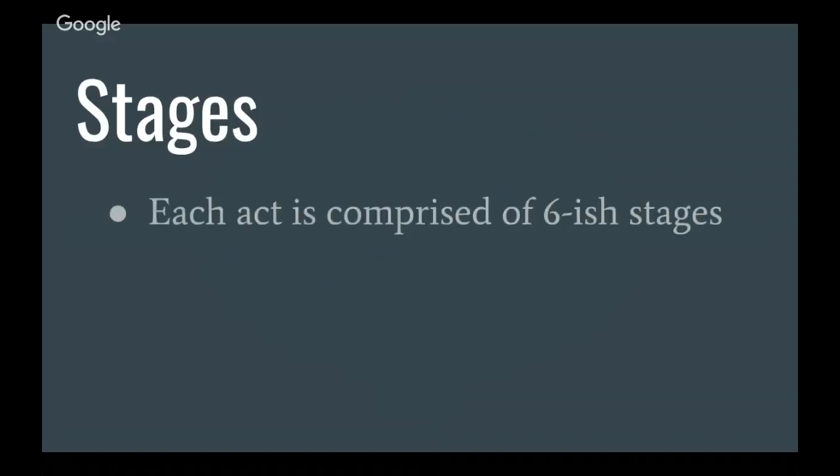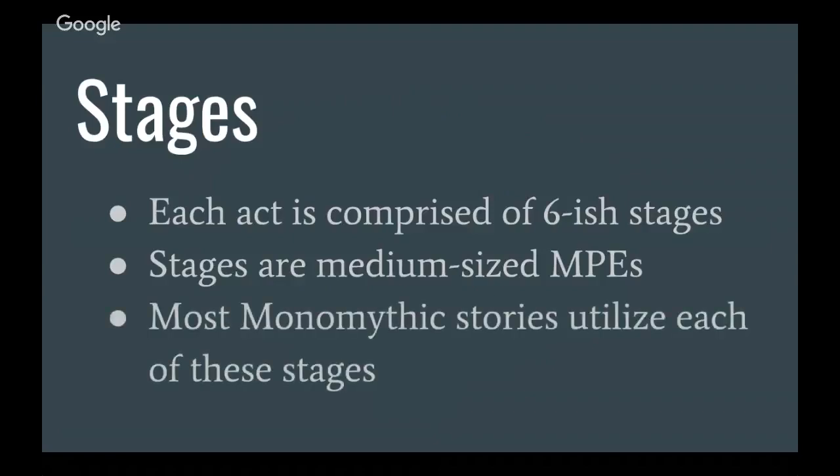Let's talk about stages. Each act is comprised of about six stages. Stages are medium-sized major plot events. They're still a major plot event, meaning that they're critical. But they're medium-sized. As you can see, if your story can be broken up into three sections, then those three major acts can be broken up yet again into another six. Most monomythic stories, most stories that follow the monomyth approach or the hero's journey format, utilize each of these stages. That's not to say that they're required or mandatory, but I would say that 90% of successful, both modern and historical stories and narratives, use most of these stages.